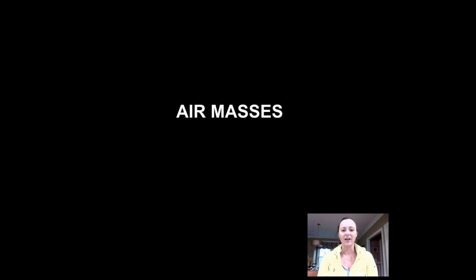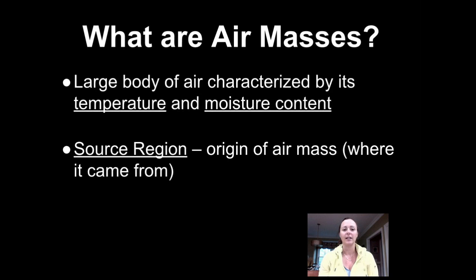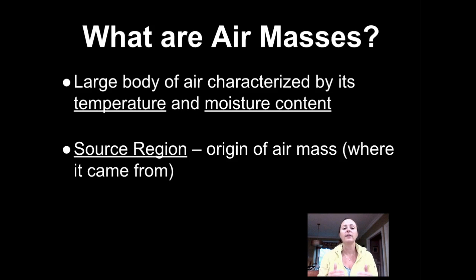Hi guys, it's Mrs. Moss here and we're going to continue our discussion of meteorology by talking about air masses. Air masses are large bodies of air characterized by two features: their temperature and their moisture content. Whether they have moisture or are warm or cold depends on the land or water they form over — that's known as their source region, the origin of where the air mass develops.